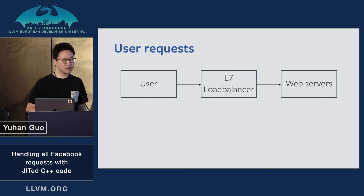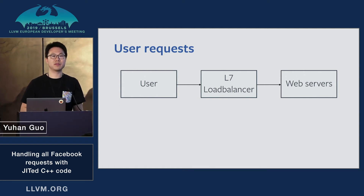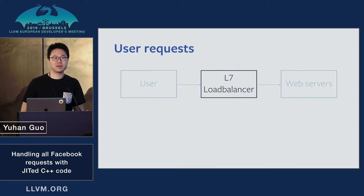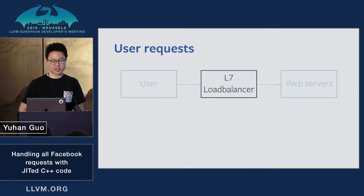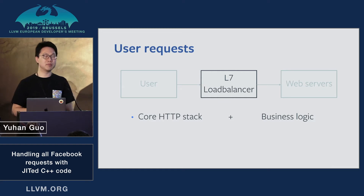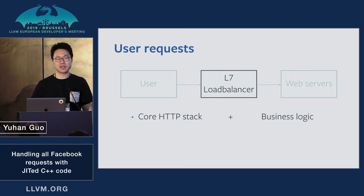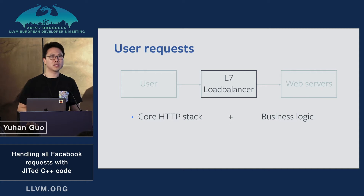All the requests coming to Facebook go through our layer 7 load balancer, get massaged, and get routed to the backend servers. The layer 7 load balancer plays a really important role in processing those requests. It consists of two parts: a core HTTP stack — part of it is already open sourced, known as Proxygen — that handles things like HTTP connection, secure connection, and some routing logic.